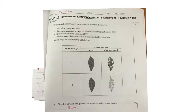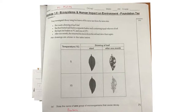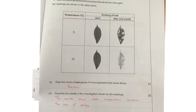Tracy investigated decay using two leaves of the same size from the same tree. She made a drawing of each leaf, then buried each leaf in a separate beaker containing equal volumes of soil. She kept one at 5°C and one at 15°C, and after one month she removed the leaves and drew them again. We've got a different temperature and we're looking at the effect of temperature on decay.